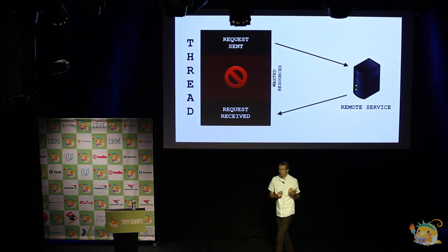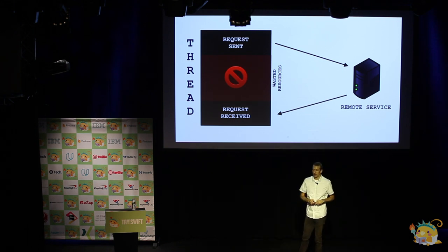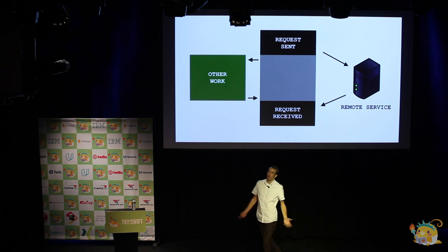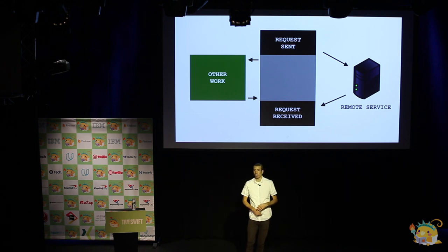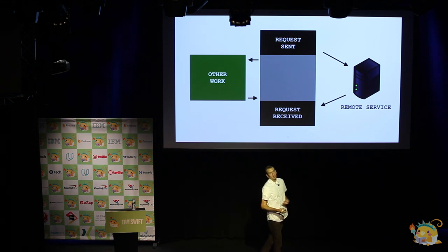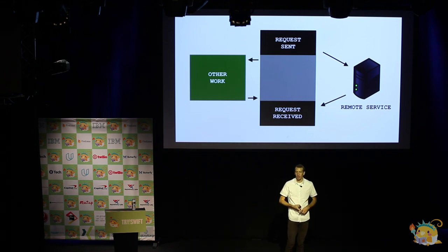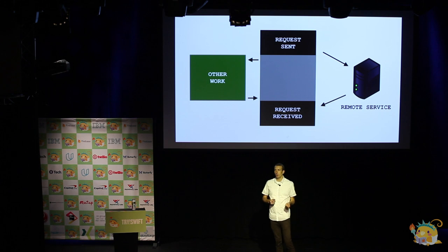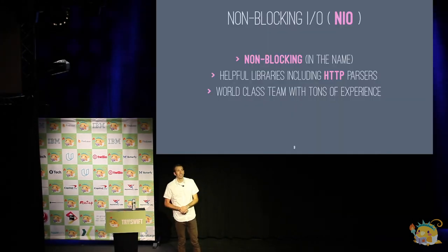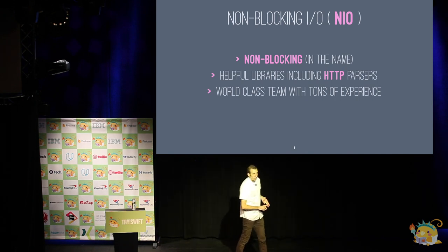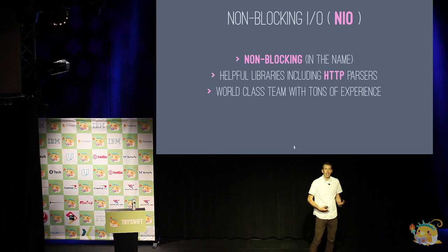Circling back to our old model — we have this thread with a lot of wasted resources sitting there. With non-blocking I/O it's not going to block that thread, so we can move that space off and add more work to be done — maybe work on another connection, another database request, or accessing two APIs and combining them. We can send them both out and process that work somewhat independently. There's some overhead switching the work, but it's still more efficient and we're wasting fewer resources. In addition to that, NIO has helpful libraries including HTTP parsers, WebSocket support, and a lot of other great resources.